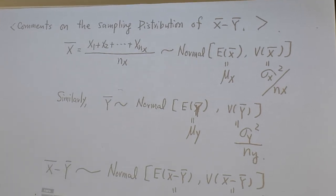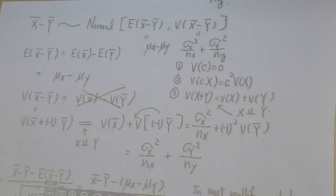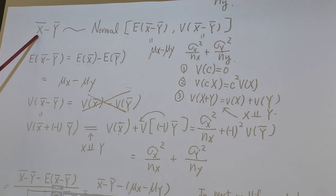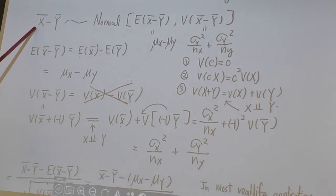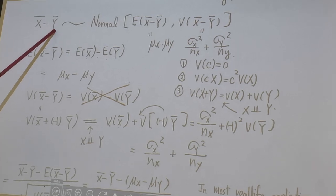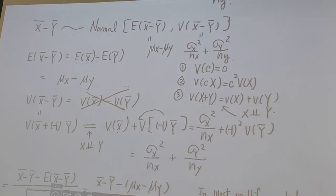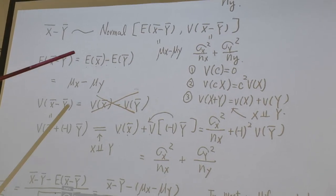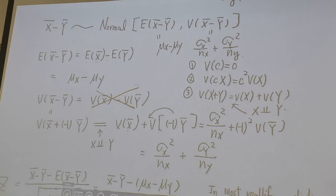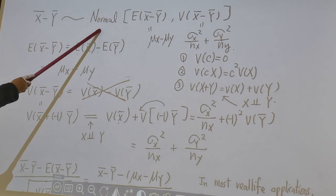And then, what is the sampling distribution of x-bar minus y-bar? Let's see. We know x-bar follows normal, y-bar also follows normal. A normal random variable subtracted by another random variable, normal plus normal or normal subtract normal, stays with what? Normal. This is normality is closed under linear combination. So x-bar minus y-bar is still normal.